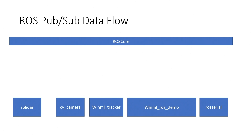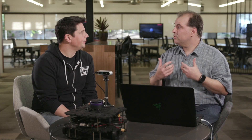ROS core serves as the central discovery mechanism for a robot. It allows all of the individual nodes — which are usually processes — to connect to ROS core and say, I'm here, tell me what I need to do. It connects to parameters and things like that.